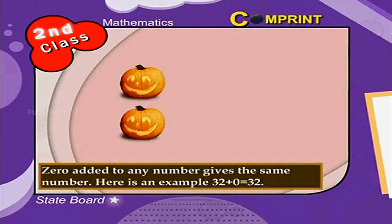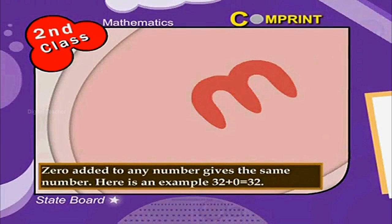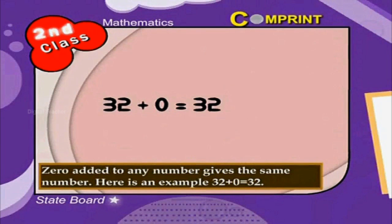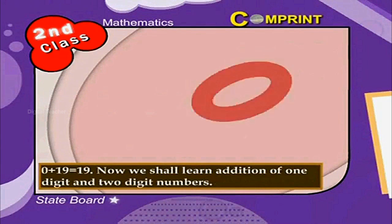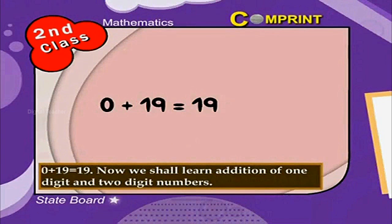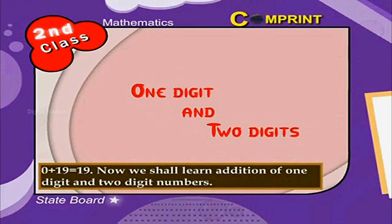Zero added to any number gives the same number. Here is an example: 32 plus 0 is equal to 32. Also, 0 plus 19 is equal to 19. Now we shall learn addition of one digit and two digit numbers.